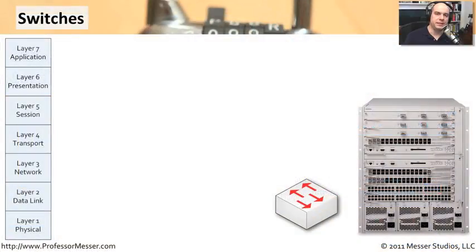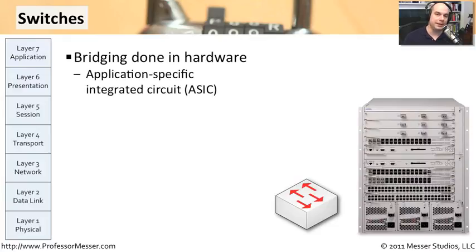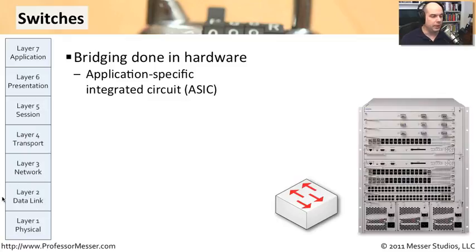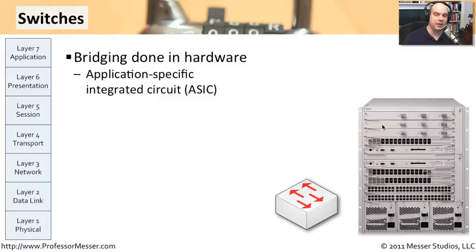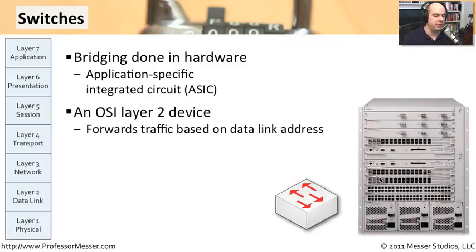Let's start our discussion of network devices with switches. These switches are really great big bridges. They operate at layer two of the OSI model — I have a representation of the different OSI layers on the left-hand side here. All of these switches do their switching, this MAC layer lookup, in hardware. They're really fast, and the back planes of these devices can communicate to each other. Two devices communicate directly without using any bandwidth or bothering anyone else on the network, so they're very efficient.